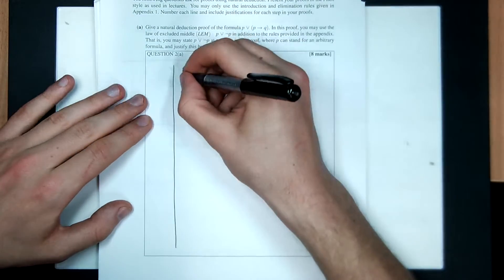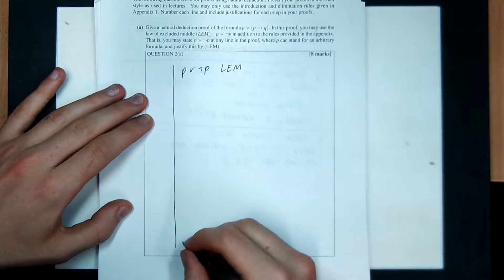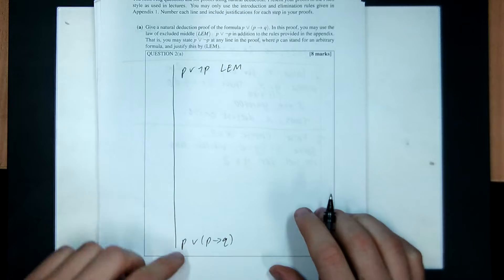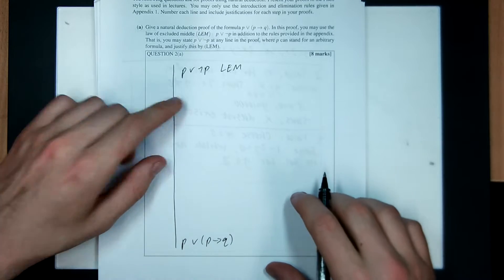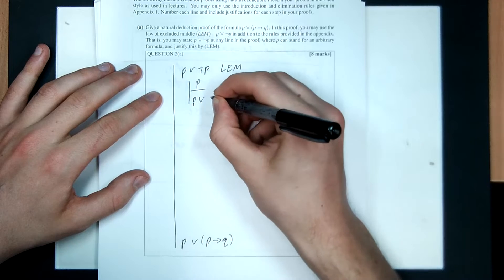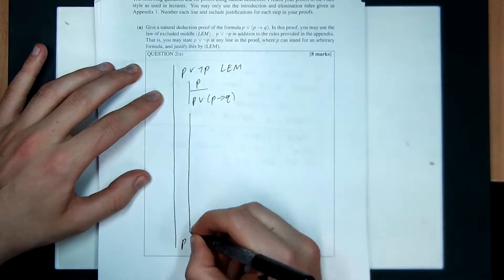So, I'm given LEM, P or not P by LEM. I need to prove P or P implies Q. It looks like the only thing I can really do is do OR elimination on this. So, assume P, OR introduce to get P or P implies Q. Okay, that was easy. Now, let's try the other half.